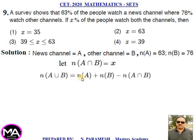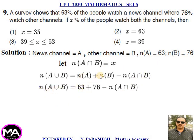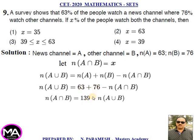N(A ∪ B) = N(A) + N(B) − N(A ∩ B). Therefore N(A ∪ B) = 63 + 76 − N(A ∩ B). Shifting to the left side: N(A ∩ B) = 139 − N(A ∪ B).